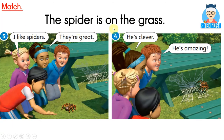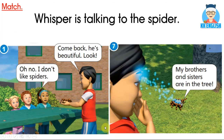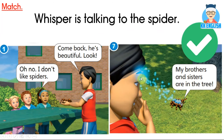'The spider is on the grass.' 那只蜘蛛在草地上。哪一个图片显示那只蜘蛛是在草地上？是这个呢，还是这个？Yes，左边这一张，it's number five. 'Whisper is talking to the spider.' Whisper 呢，和那只蜘蛛正在说话。哪一张图片显示 Whisper 和蜘蛛正在说话呢？Yes, correct! 是这一张，他们两个正在说话。